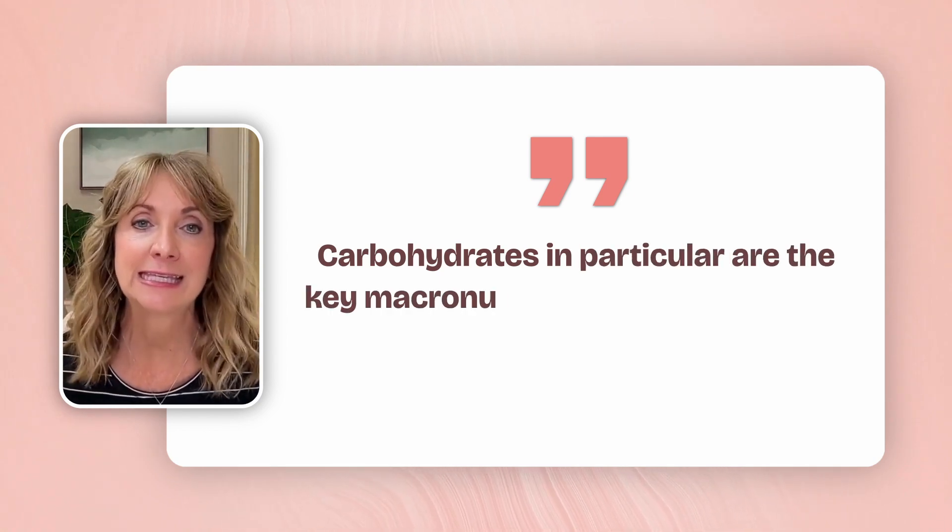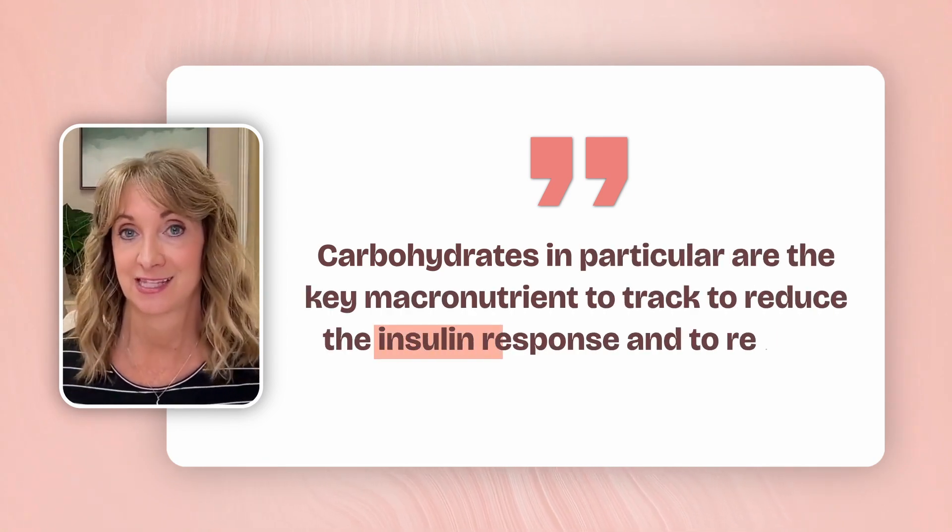Carbohydrates in particular are the key macronutrient to track to reduce the insulin response and to reduce excessive glucose spikes. Using this approach with Cronometer and a Dexcom Stello CGM on a regular basis will help you understand your carbohydrate tolerance level so that you can normalize lab results like fasting blood glucose and hemoglobin A1c — the very labs that your doctor is most likely reviewing if you've been diagnosed with prediabetes. The info in the little black box will change to whatever nutrient you're comparing; if you choose protein, it will show the protein total at each meal. You can also compare your CGM chart to a biometric like heart rate variability or body temperature.